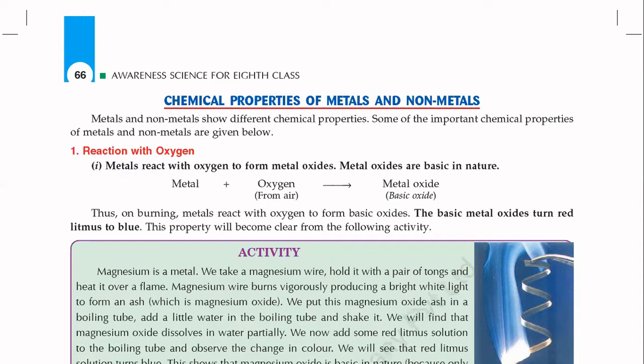Now let's talk about a basic liquid. If you dip the blue litmus paper in it, there will be no impact. But when you dip the red litmus paper, the red litmus paper will be converted into blue color. This indicates that the chemical solution is basic in nature. A basic solution turns red litmus paper to blue.